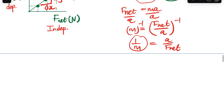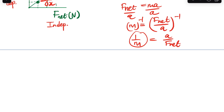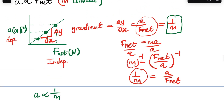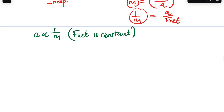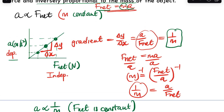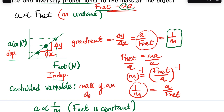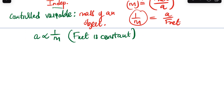Now let's look at the relationship between acceleration and mass, where the acceleration is inversely proportional to the mass while F-net is kept constant. The controlled variable in this relationship is the mass of the object. Graphically, we plot acceleration in meters per second squared on the y-axis and mass in kilograms on the x-axis.